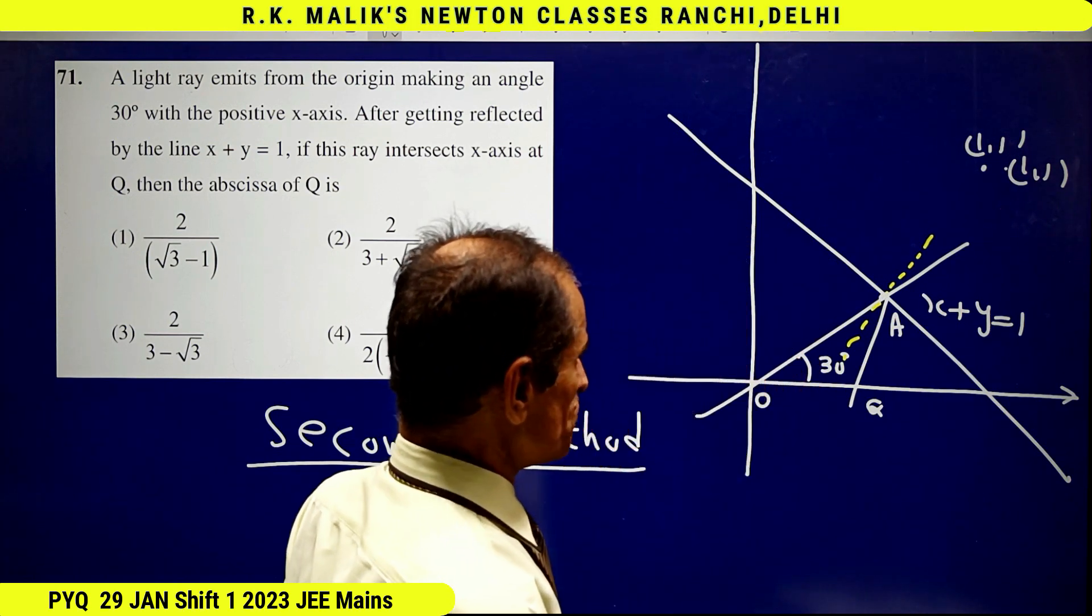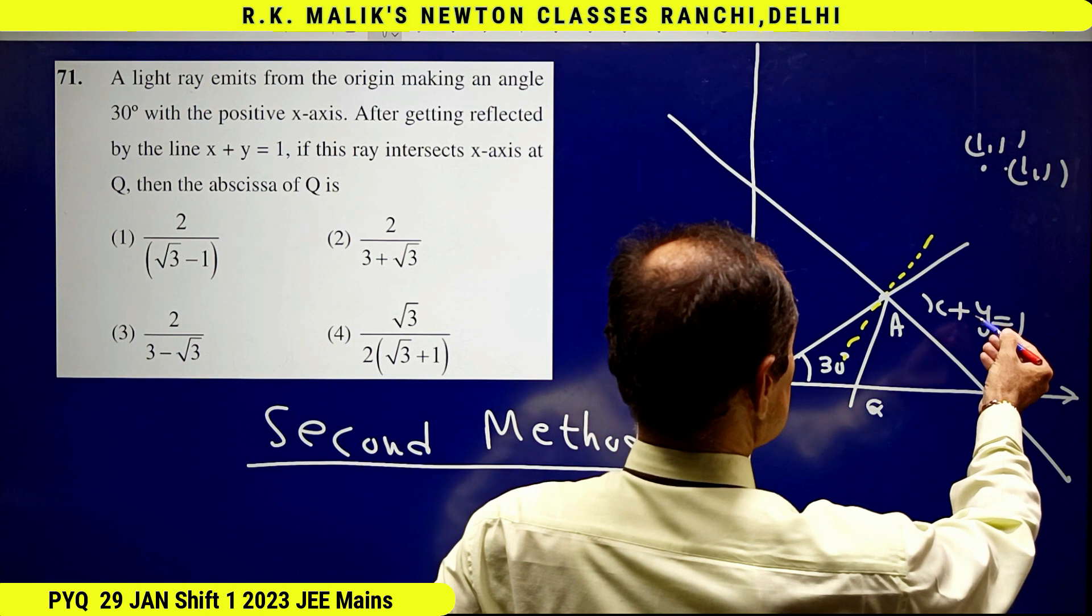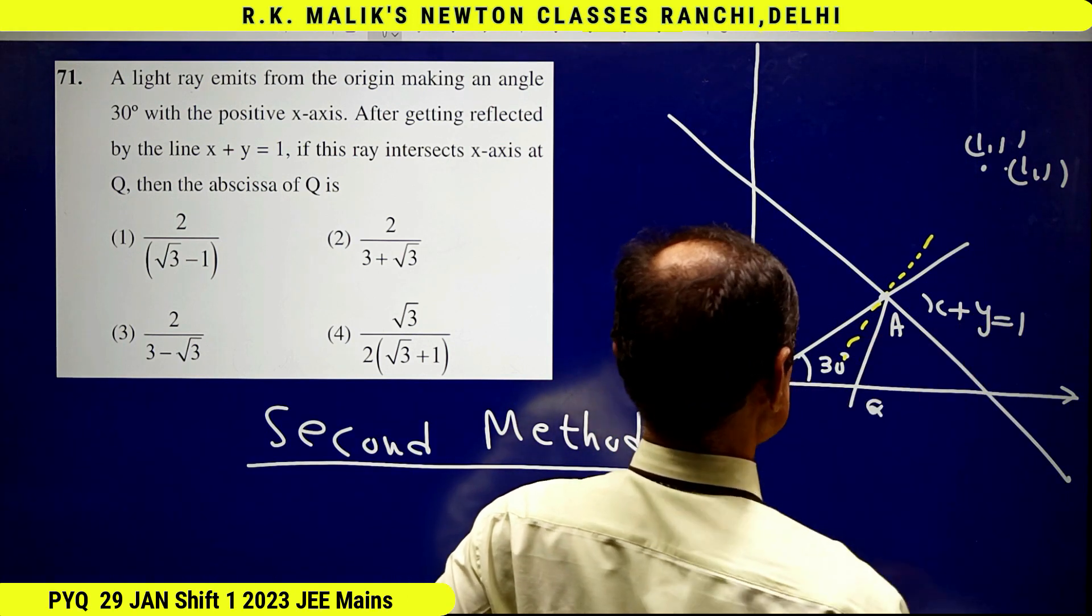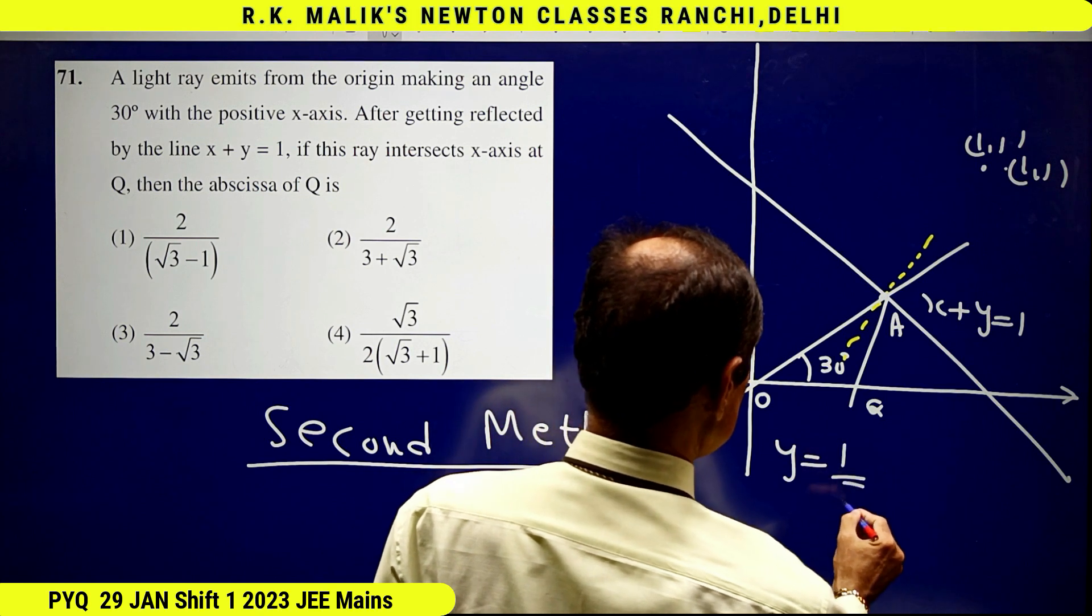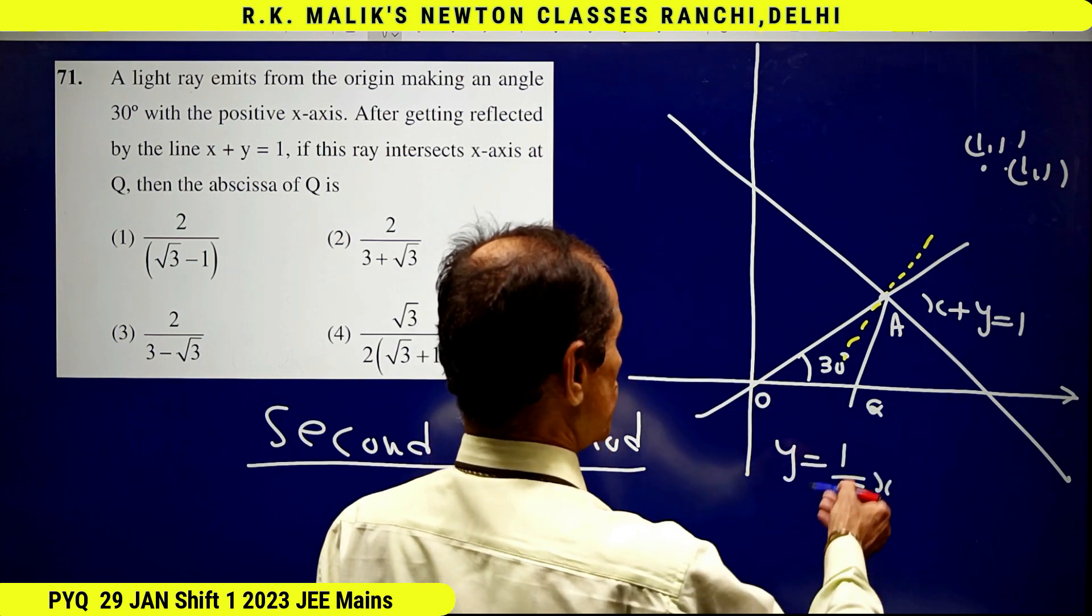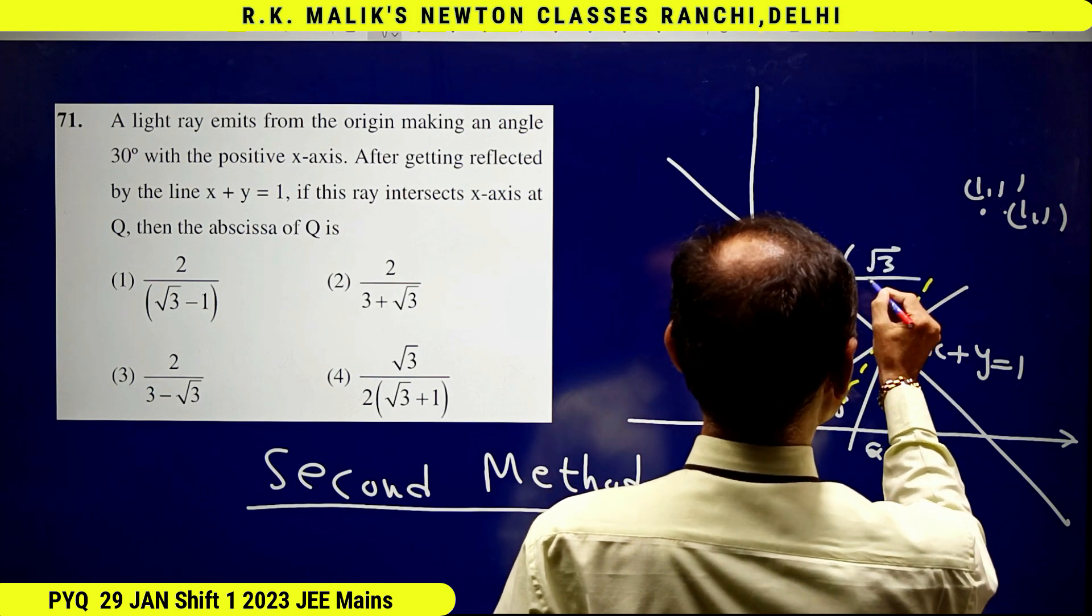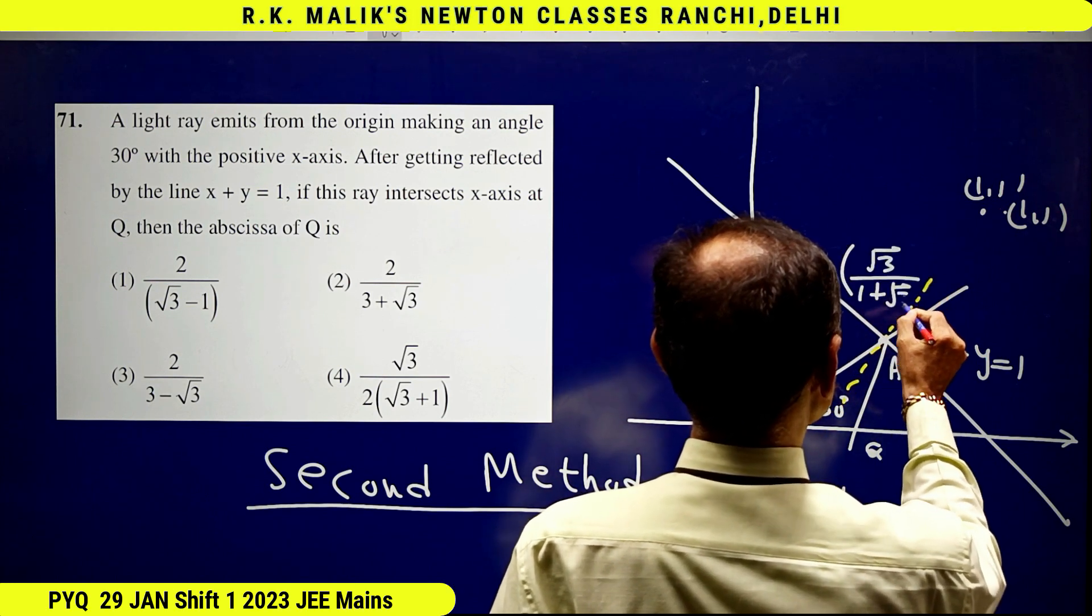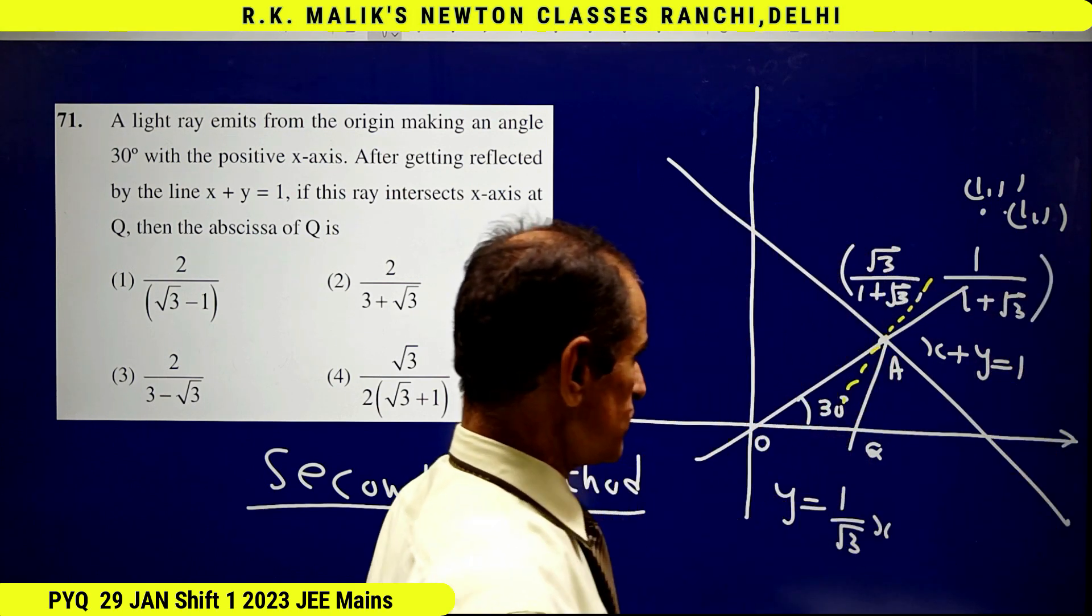You can easily find this point also by solving this line and this line simultaneously. This line is y = x/√3. By solving these two lines, I get this point as √3/(1+√3) and 1/(1+√3).